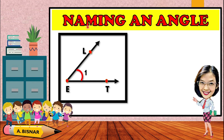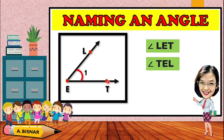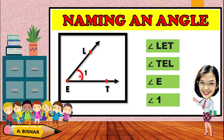Next, how do we name an angle? For example, this illustration can be named as angle LET or angle TEL. Notice that the vertex is always in the middle when naming an angle — the vertex must always be the middle letter. It can also be named simply as angle E, or as angle 1. So we have four ways to name an angle: angle LET, angle TEL, angle E, or angle 1.